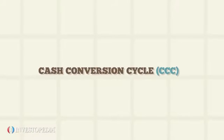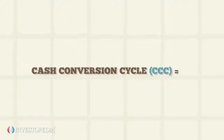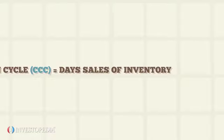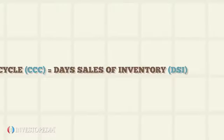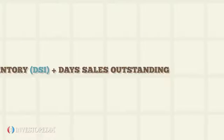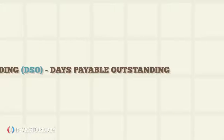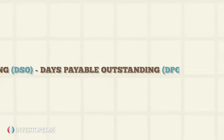The cash conversion cycle equals the days sales of inventory (DSI), plus days sales outstanding (DSO), minus days payable outstanding (DPO).